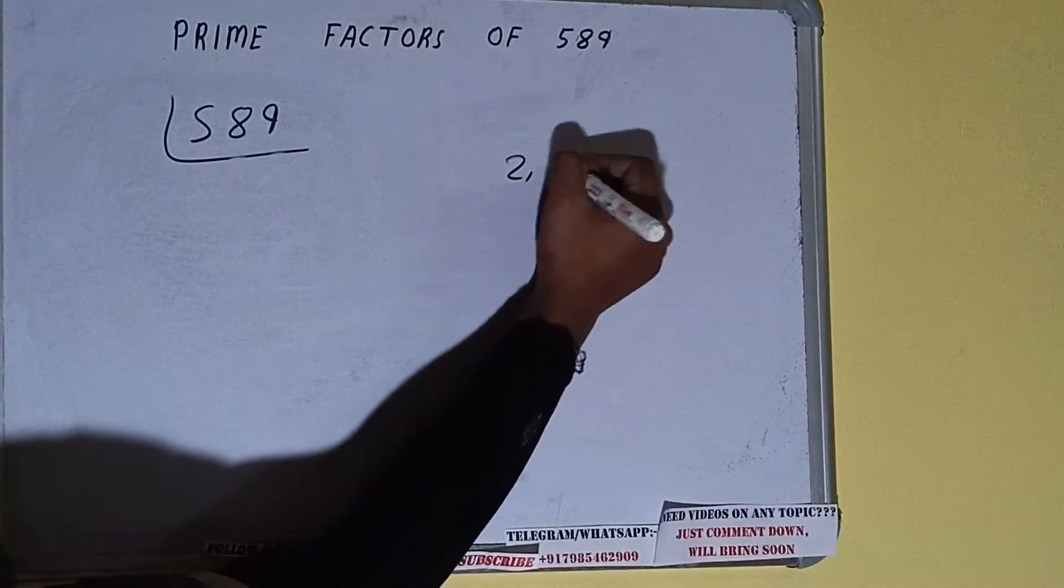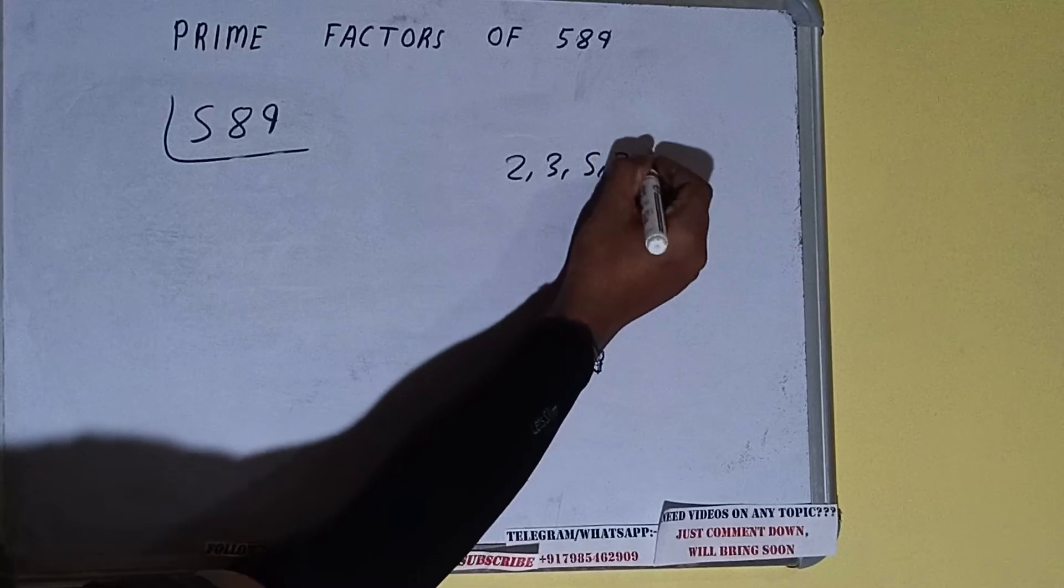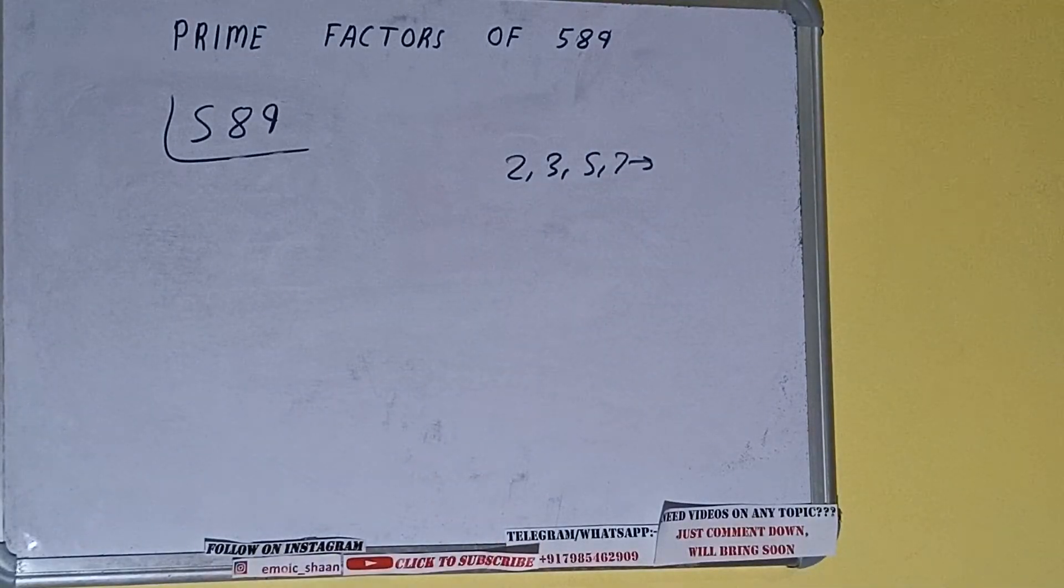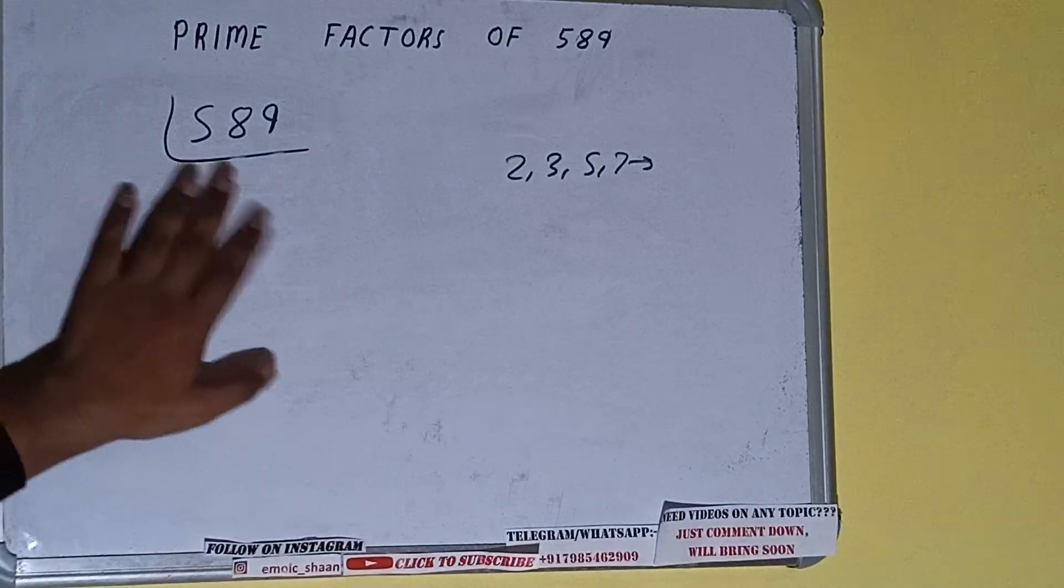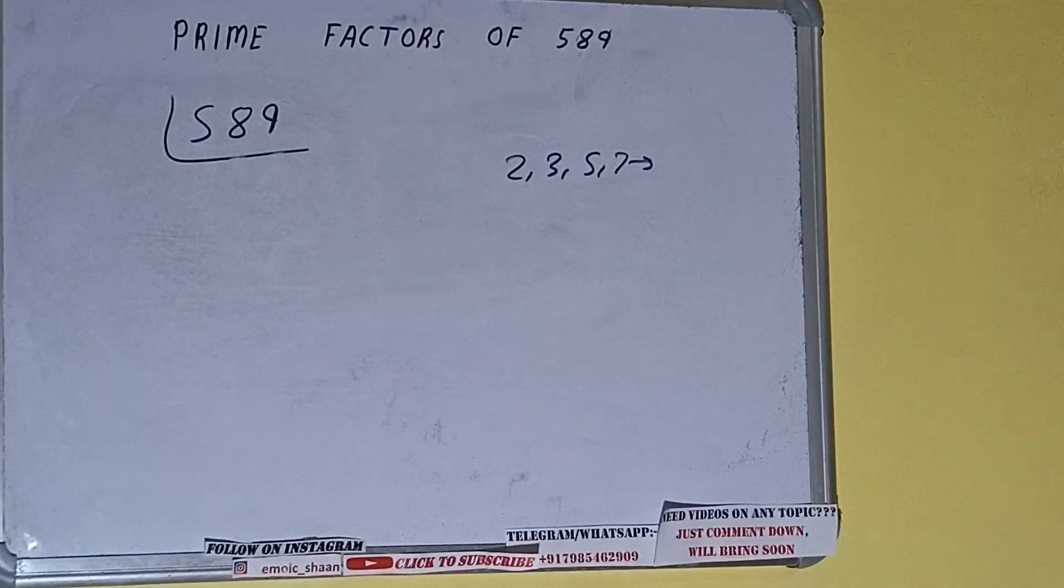Alright, so we will check with the lowest prime number we have, that is 2. Is the number 589 divisible by 2? It is not because the number is odd.